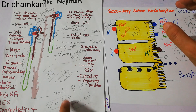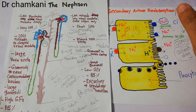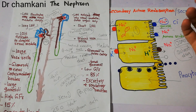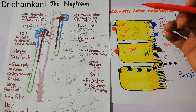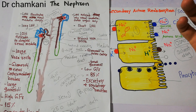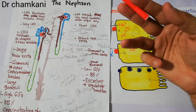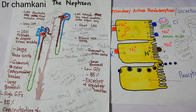That's all about the proximal tubule. Next we will talk about secretion along the proximal tubule, and then slowly and gradually we will discuss the loop of Henle, the distal tubule, and the collecting duct. Thanks a lot for watching the video.